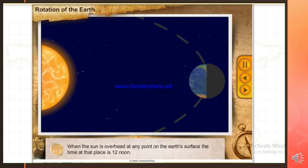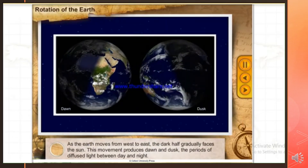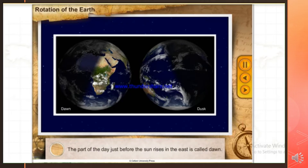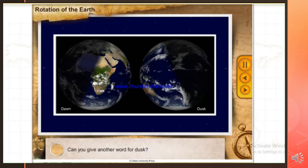When the Sun is overhead at any point on the Earth's surface, the time at that place is 12 noon. As the Earth moves from west to east, the dark half gradually faces the Sun. This movement produces dawn and dusk, the periods of diffused light between day and night. The part of the day just before the Sun rises in the East is called dawn. The part of the day when the Sun sets in the West and there is still some light is called dusk. Another word for dusk is twilight.